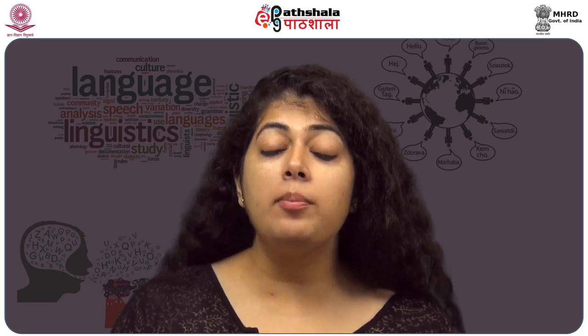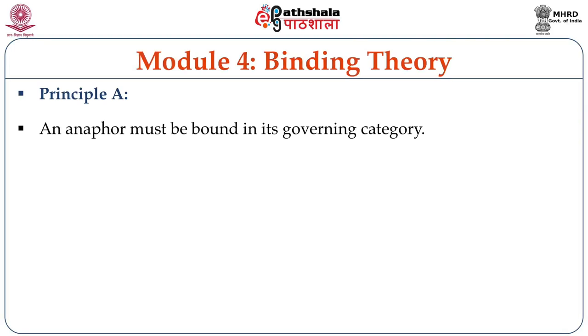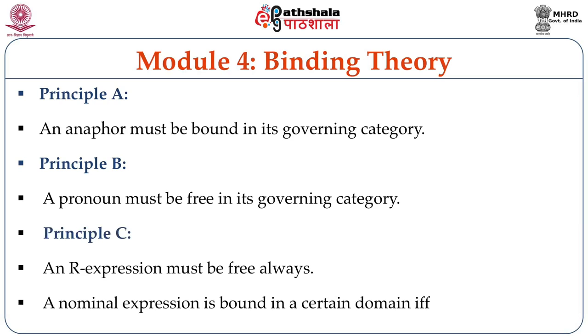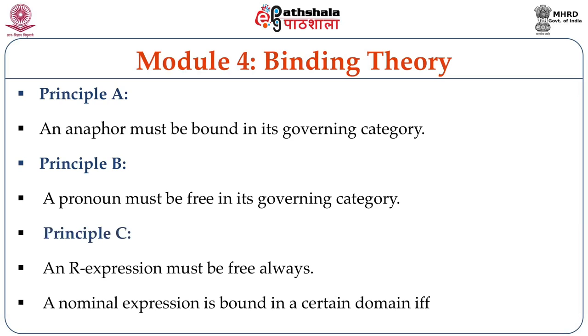Now let's move on to the binding principles that constrain what expression can get coreferenced with what in a sentence. Principle A states that an anaphor must be bound in its governing category. Principle B states that a pronoun must be free in its governing category. Principle C states that an R-expression must be free everywhere. In 'John loves himself,' John and himself are coreferenced. To see whether himself is bound by John, we also have to check whether himself gets C-commanded by John. By the definition of C-command, himself does get C-commanded by John. Thus, as himself is both C-commanded and coreferenced by John within its domain, himself gets bound by John.